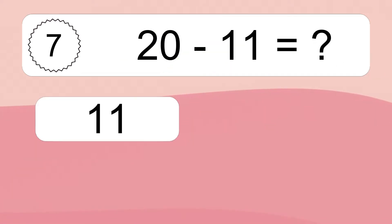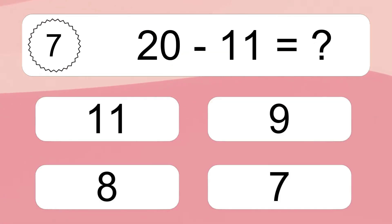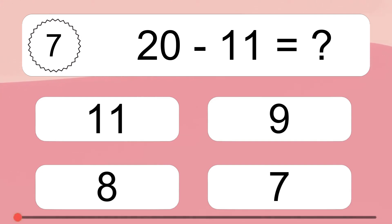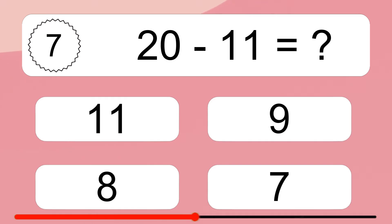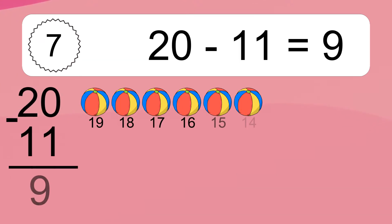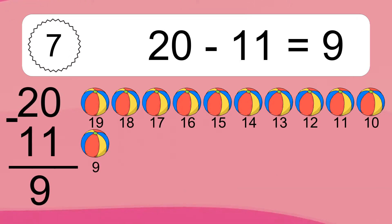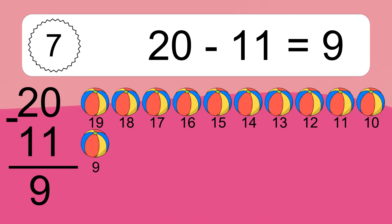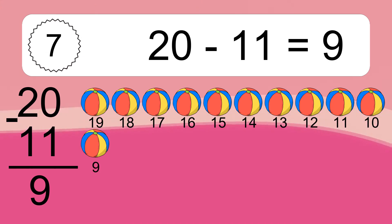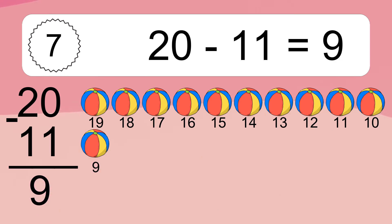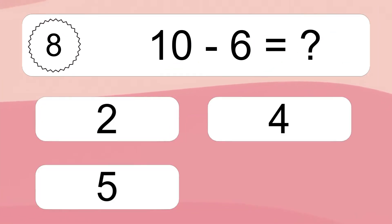20 minus 11 equals what? 20 minus 11 equals 9. Let's count it: 19, 18, 17, 16, 15, 14, 13, 12, 11, 10, 9.